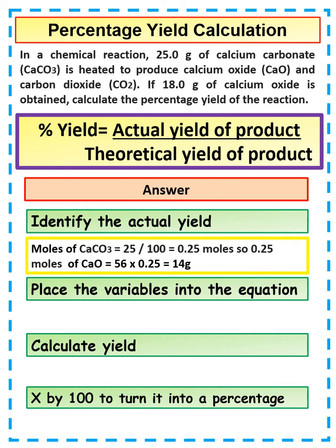We're then going to place these variables into our equation. We're going to have the actual yield, which is 14, which we've just worked out, divided by the theoretical yield, which is 18, which is in the question.